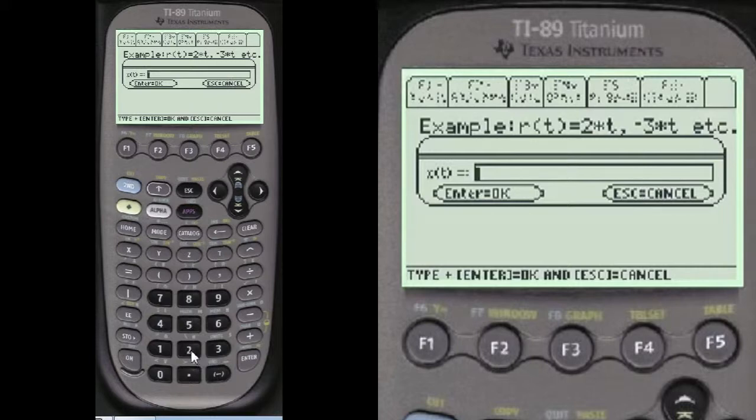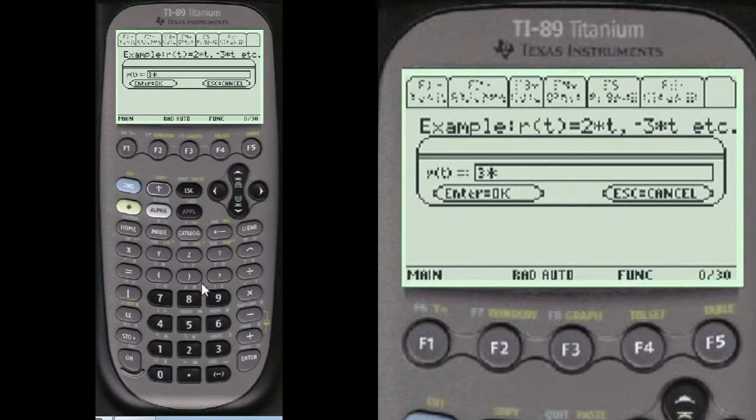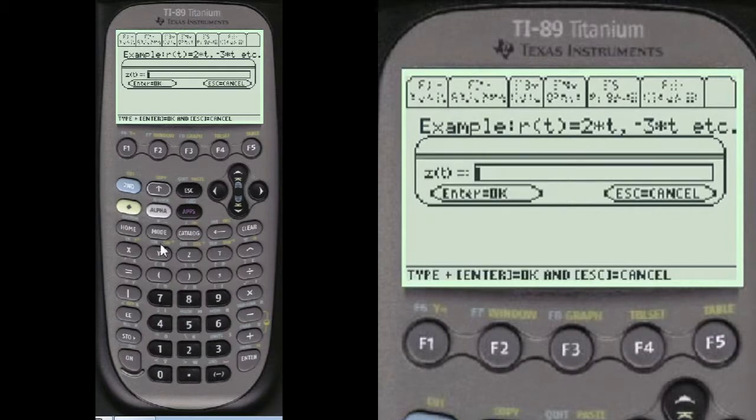You're going to press alpha 2 times t minus 5. And for the y, we're going to put alpha 3 times t plus 9. And for the z of t, we're going to put 0.